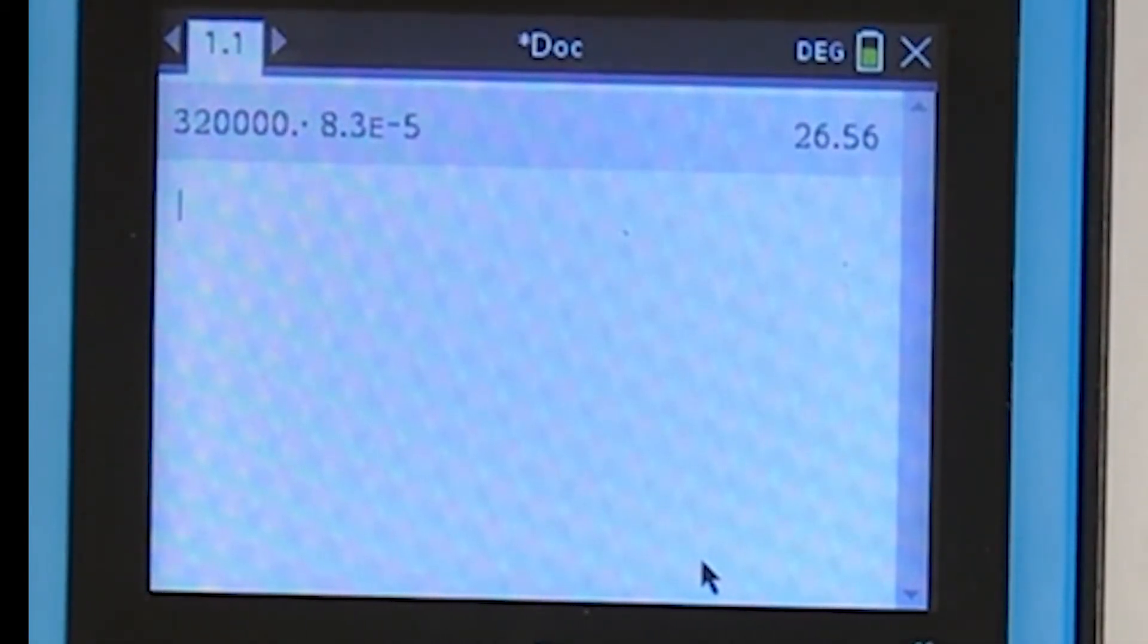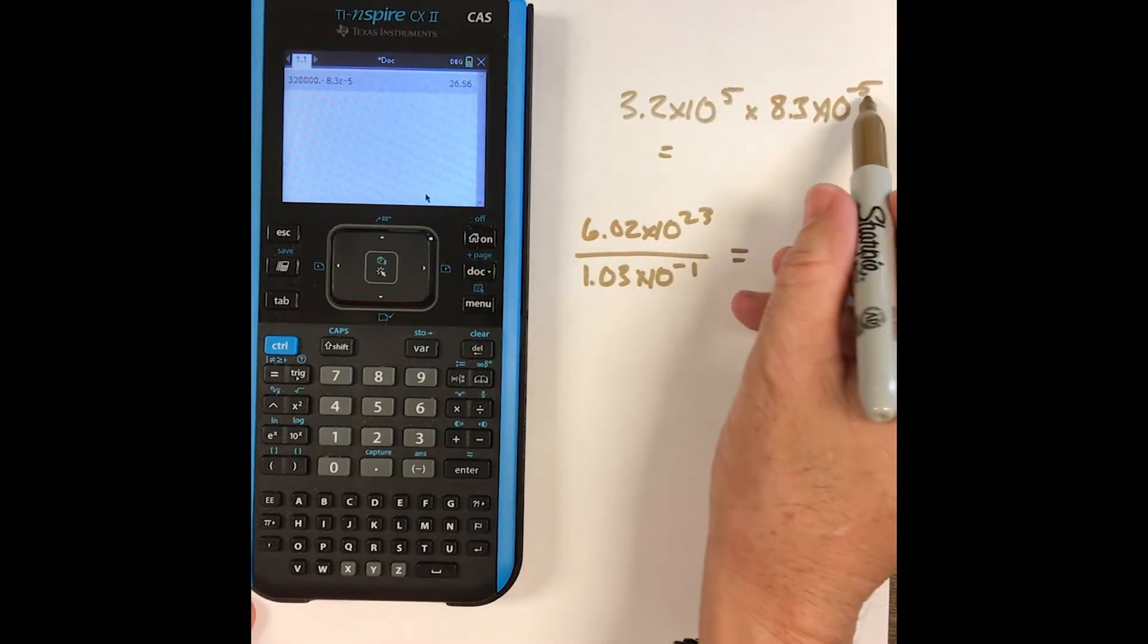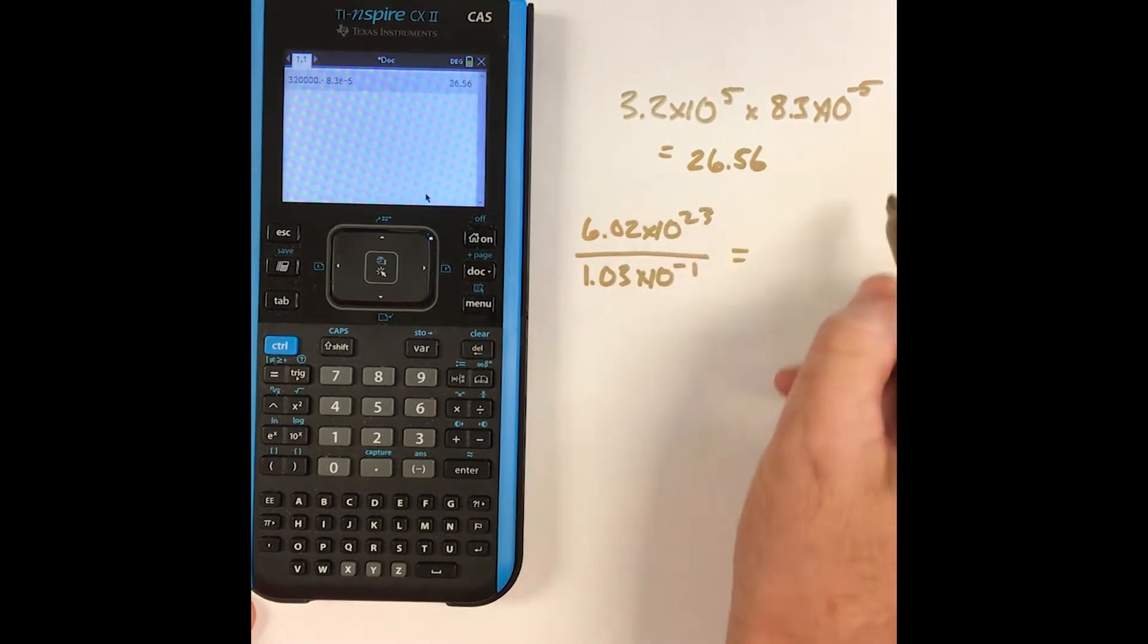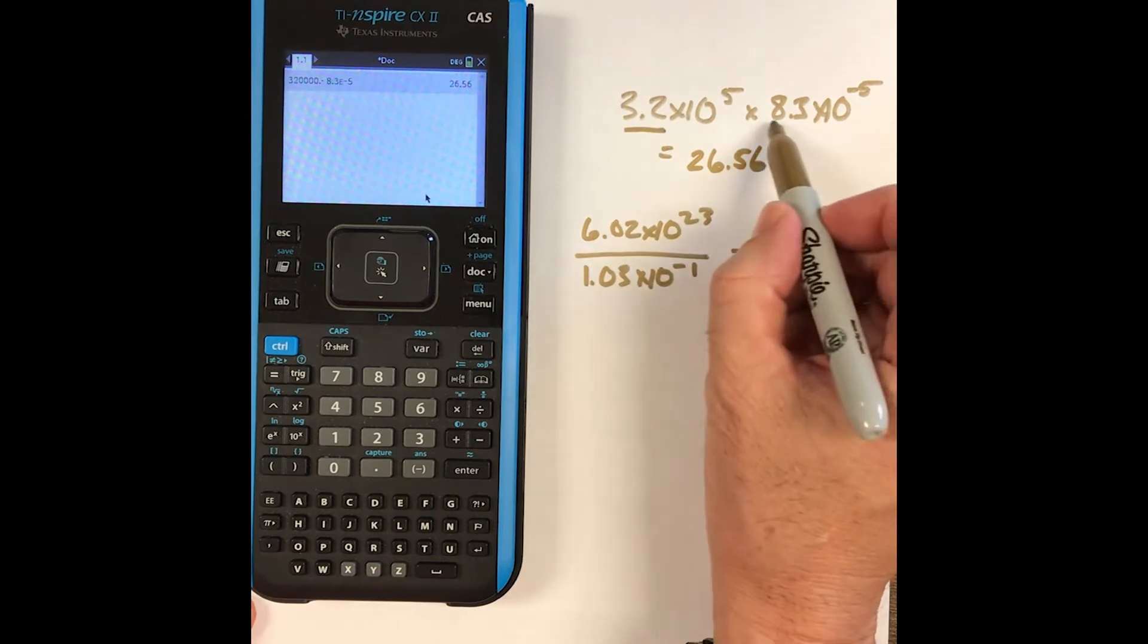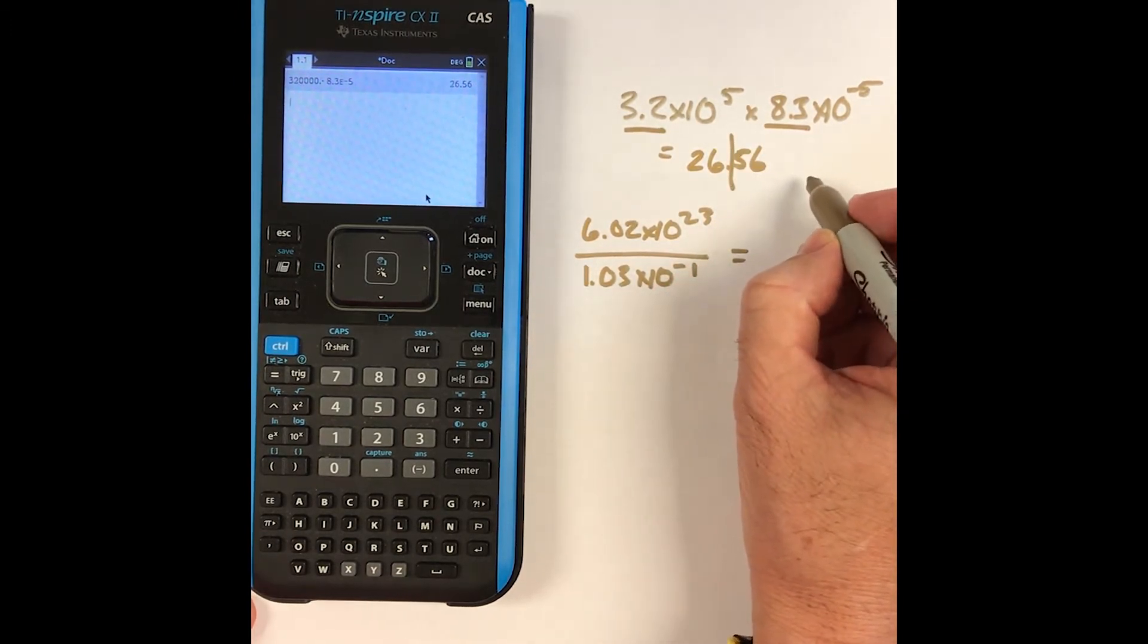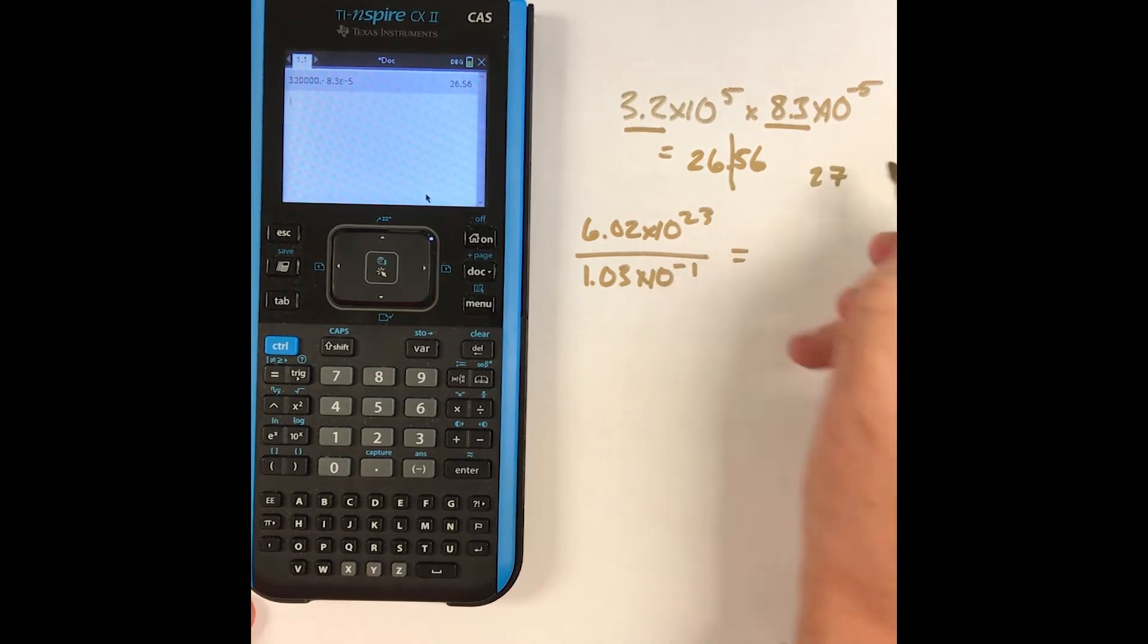And it gives me, now this answer, by the way, this is 5 and negative 5. It gives me a regular number. This is just going to be 26.56. Now in chemistry land, we understand this is two significant digits and two significant digits. So we're going to round to the second digit. So this answer would be 27.